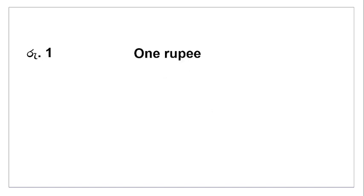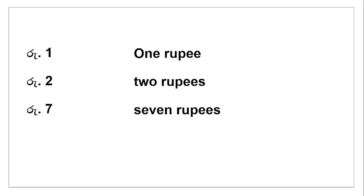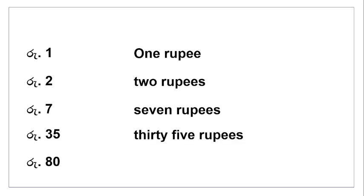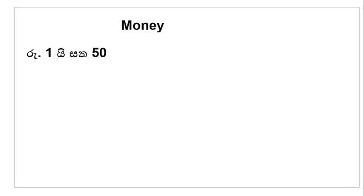One rupee — rupee alay. Two rupees — rupee al dekka. Seven rupees — rupee al hatta. Thirty-five rupees — rupee al tispa. Eighty rupees — rupee al lasu. One rupee, two rupees, seven rupees, thirty-five rupees, eighty rupees — rupee al leka ai sata paana.